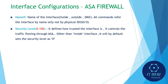The second configuration is the security level, ranging from 0 to 100 — 100 is most trusted, 0 is least secure. When you name an interface 'inside', it automatically assigns security level 100. When you give any other name, it automatically assigns security level 0.